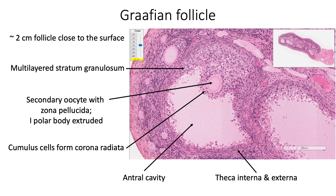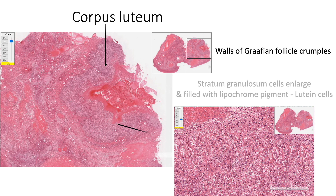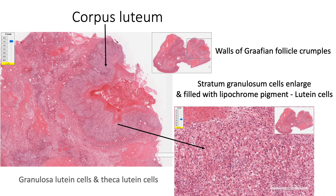Once the oocyte is ovulated, we have the formation of corpus luteum. Post-ovulation, the walls of the Graafian follicle crumple. The stratum granulosa cells enlarge and are filled with yellow carotenoid lipochrome pigment to form the lutein cells. The surrounding thecal cells also enlarge to form the theca lutein cells. These granulosa lutein cells and theca lutein cells secrete estrogen and progesterone.